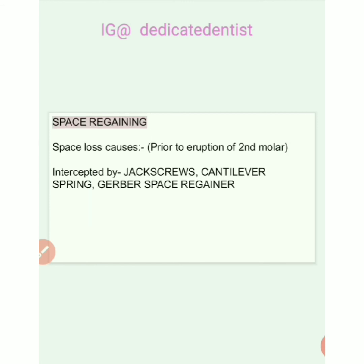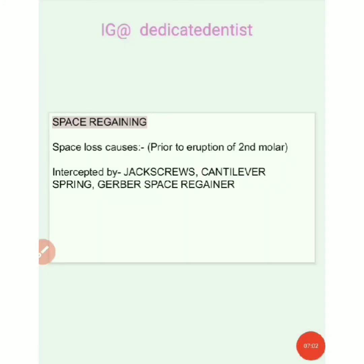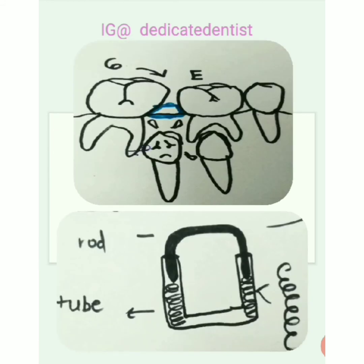In space regaining: if a tooth has been lost and we didn't give a space maintainer, there will be space loss — the tooth distal to the lost tooth may move mesially, causing loss of arch length. To regain that space, we give a space regainer. We give a Gerber space regainer using jack screws or finger springs, as seen in the picture.